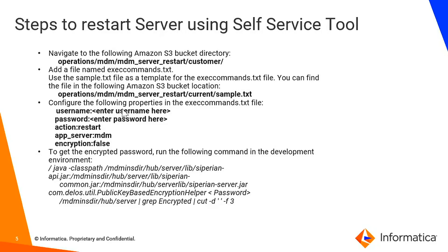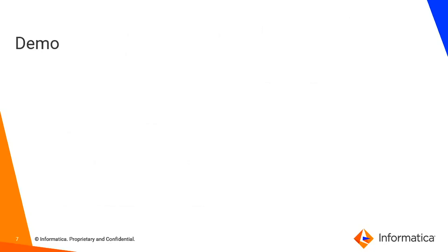For the username, use the admin credentials only. If you want to use encryption, set it to true. To generate an encrypted password, run the Java classpath command from a Putty session. For example, if restarting the QA server, add the QA password and run the Java classpath command. The output will show an encrypted password as a long string — copy that password, put it in the file, save it, and upload it to the customer folder. Once uploaded, the restart process will start. After a few minutes you will see the file is processing.